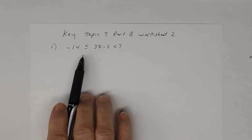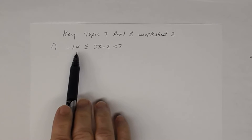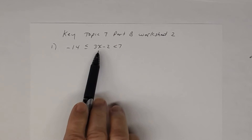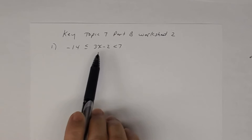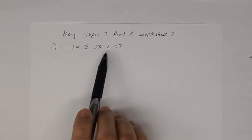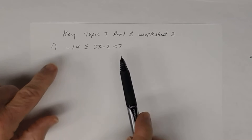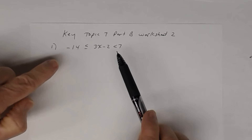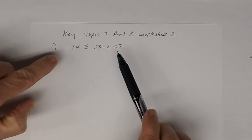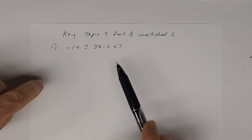If you look at number one, you have this compound inequality. It states that negative 14 is less than or equal to 3x minus 2, and at the same time, 3x minus 2 has to be less than 7. In our lesson, we talked about the fact that for this particular problem, you can solve this in two different ways.